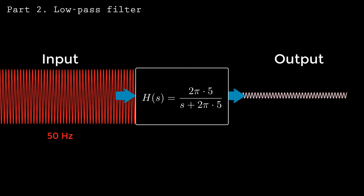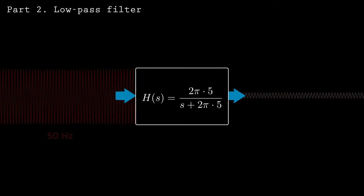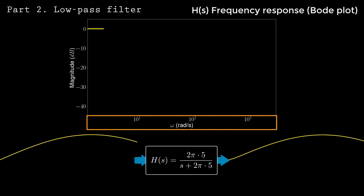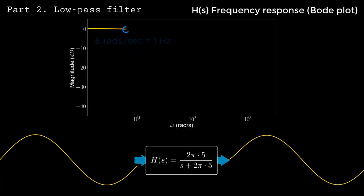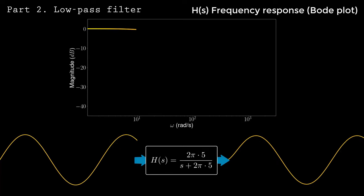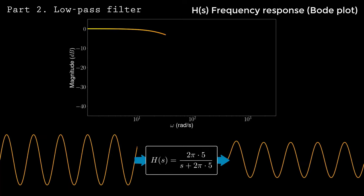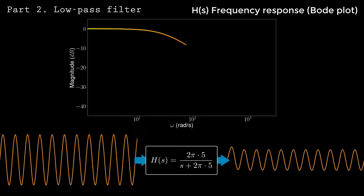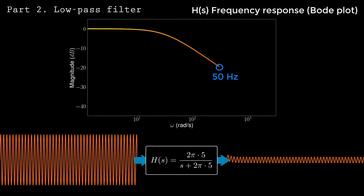You can understand how the filter affects other frequencies by looking at the Bode plot. The first graph shows the magnitude of signals that have passed through the filter as a function of their frequency in radians per second. At an input frequency of 1 Hz, the signal is largely unaffected. At the filter's cutoff frequency of 5 Hz, the Bode plot shows -5 dB, meaning the signal is attenuated to 50% of its original magnitude. At 50 Hz, only 10% of the signal remains.